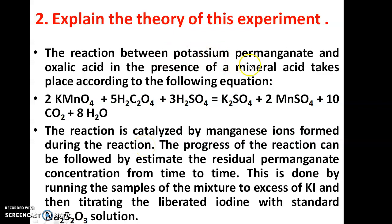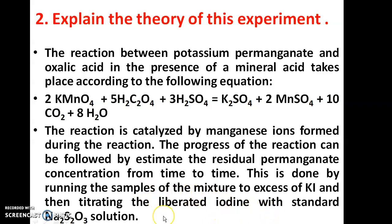The reaction takes place between potassium permanganate and oxalic acid in the presence of mineral acid. To the reaction mixture, we are adding excess of potassium iodide. Then the sample is titrated with Na2S2O3 — sodium thiosulfate — solution to find the end point.